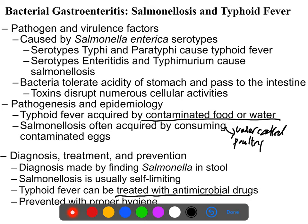Salmonellosis is diagnosed by symptoms and by finding gram-negative rod-shaped Salmonella in the stool. You grow it on a Salmonella-sensitive plate — probably an HKT plate — and Salmonella will produce blue-green colonies with black dots from precipitated iron. That's how you identify Salmonella, and if you find that in the stool, you've got salmonellosis.